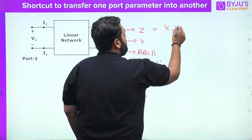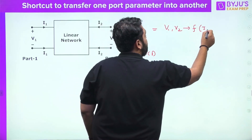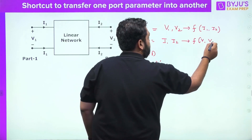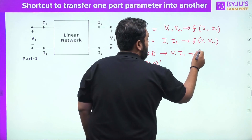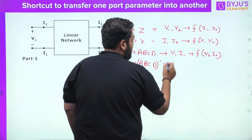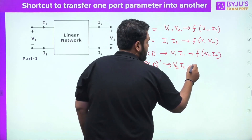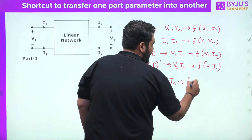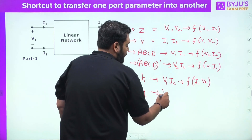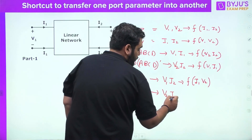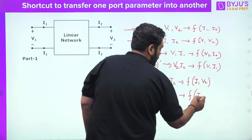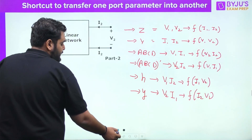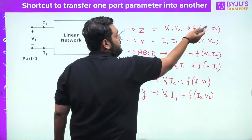If we talk about the Z parameter, it tells you the relation between V1 and V2 as a function of I1 and I2. The Y parameter will give you a relation between I1 and I2 as a function of V1 and V2. In this way you have different parameters which give you a relation between dependent and independent parameters.